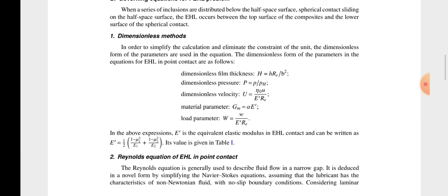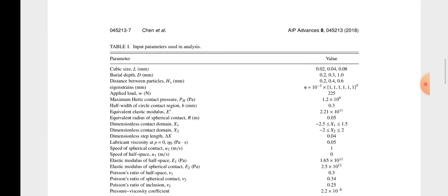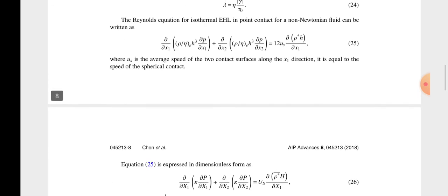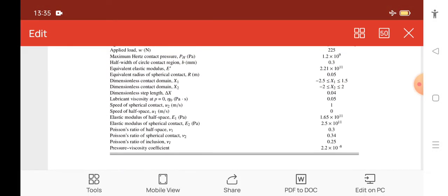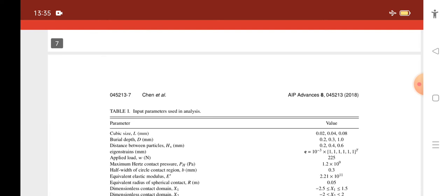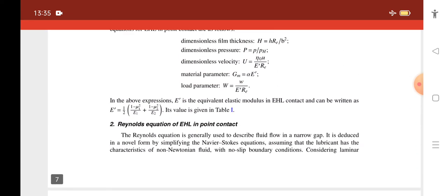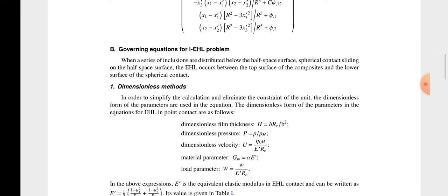These are the dimensionless methods. Dimensionless film thickness H is H Re B square. Dimensionless pressure P is equal to P upon P.